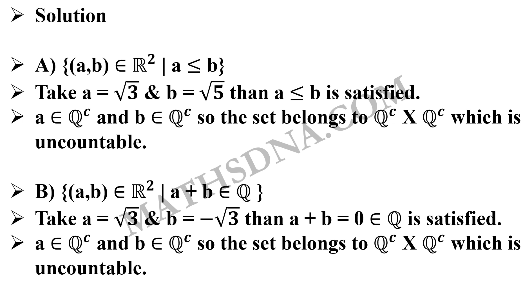See, the condition given says that a+b ∈ Q. It is not necessary that a and b both are from Q. In the above condition A also, a ≤ b - no other restriction was there on a and b. So we intentionally took irrational to find out.